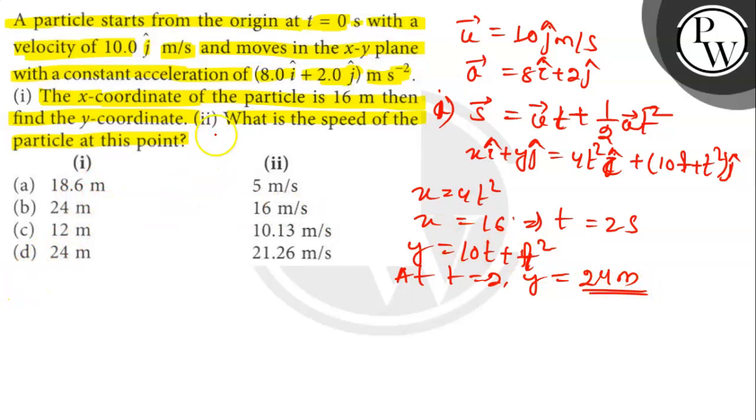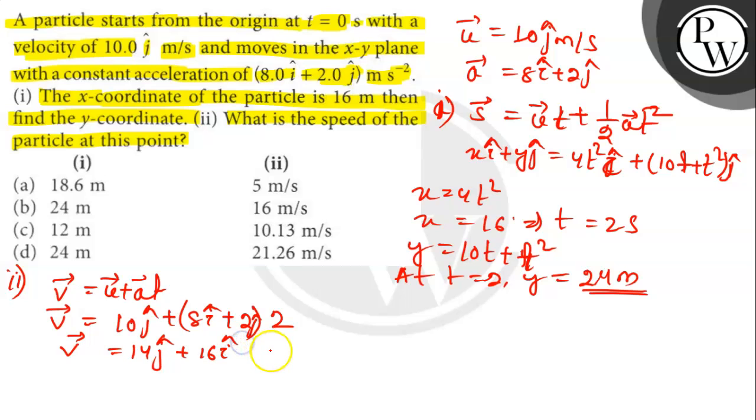Let's find out. The speed of the particle at any instant is given by v equals u plus a t. So, v is 10 j cap plus 8 i cap plus 2 j cap into 2. Here v vector is 14 j cap plus 16 i cap.